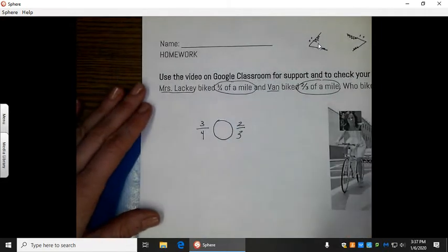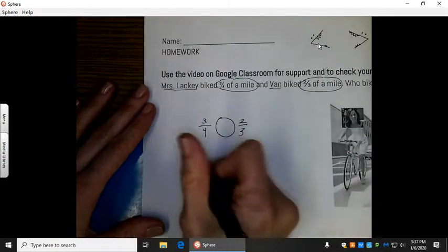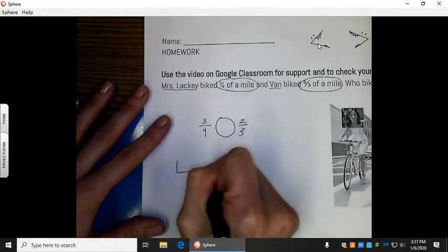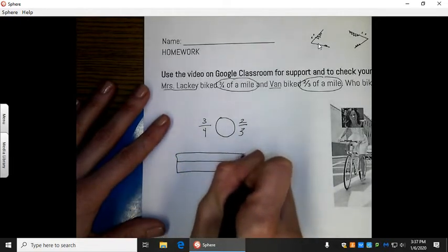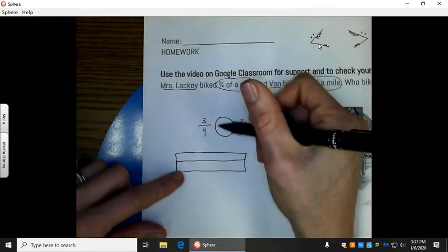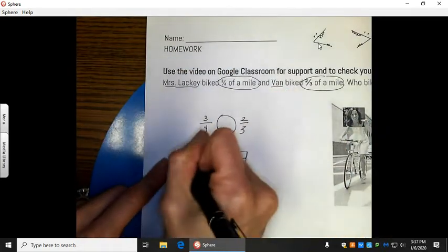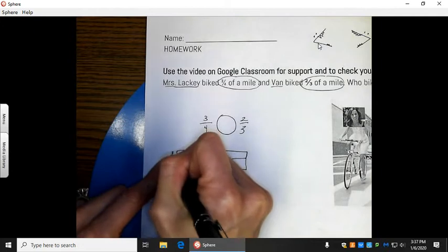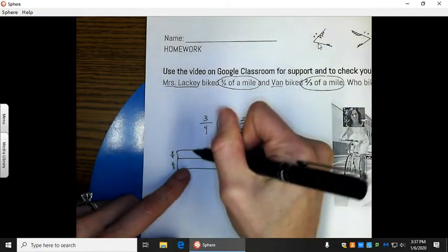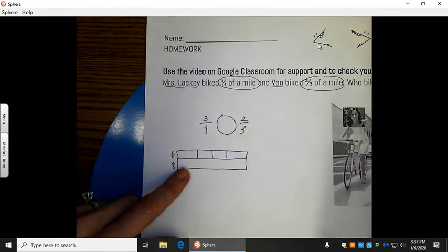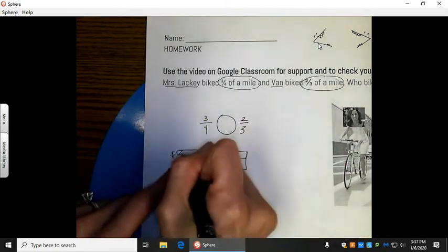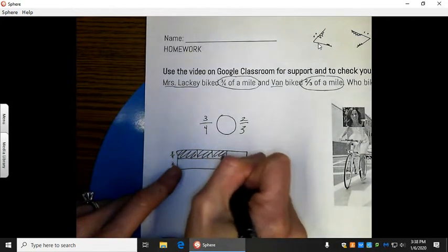Now, one way that we've learned to do this is by drawing a model. But the tricky piece is that the model needs to be the exact same size. You have to be really careful. I'll put three-fourths in this part of the model. I'm going to cut it into four equal spots. And I'm going to say it's one, two, three out of four.